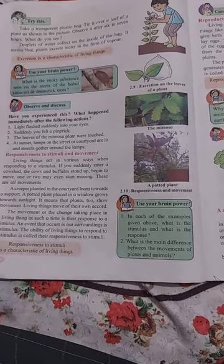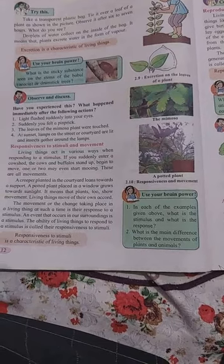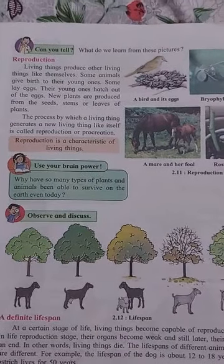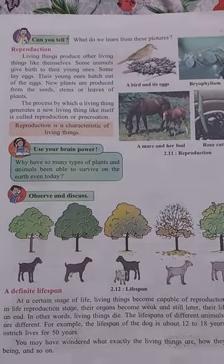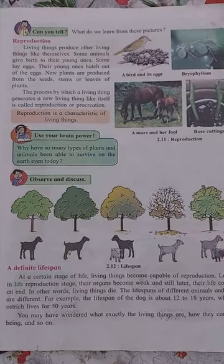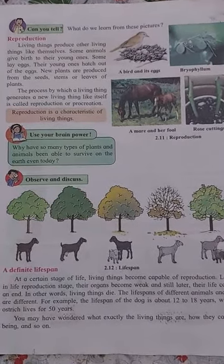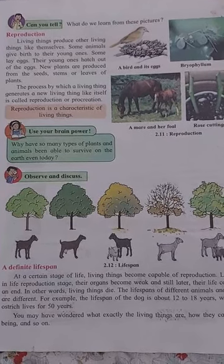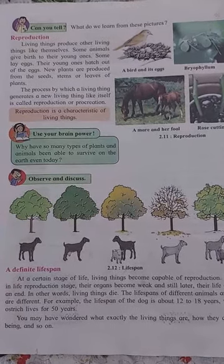There are two questions. In each of the examples given above, what is the stimulus and what is the response? And second, what is the main difference between the movements of plants and animals? Reproduction. Living things produce living things like themselves. Some animals give birth to their young ones; some lay eggs and their young ones hatch out of the eggs. New plants are produced from the seeds, stems or leaves of plants. The process by which a living thing generates a new living thing like itself is called reproduction or procreation. Reproduction is a characteristic of living things.